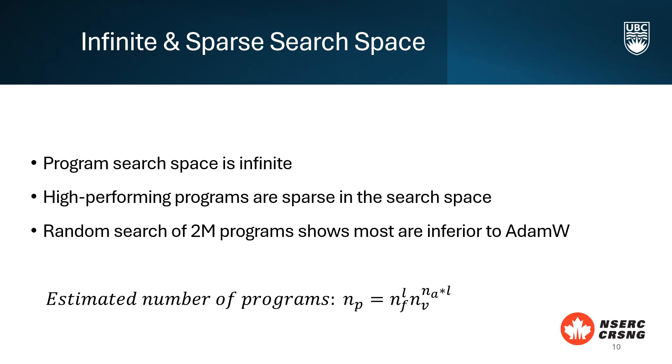However, high-performing programs are sparse within this vast space. A random search through two million programs revealed that most were inferior to AdamW. This highlights the challenge of finding optimal algorithms in such a vast search space.